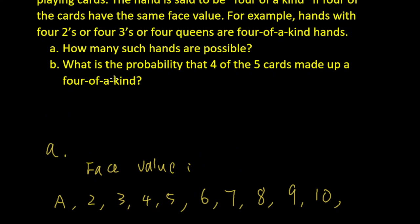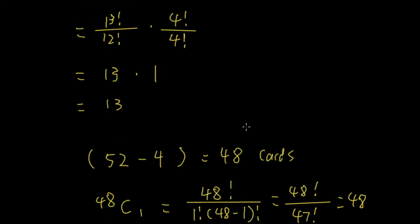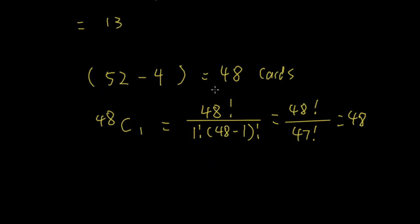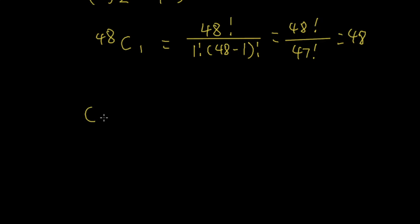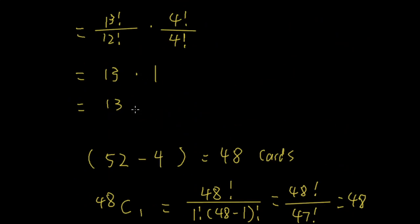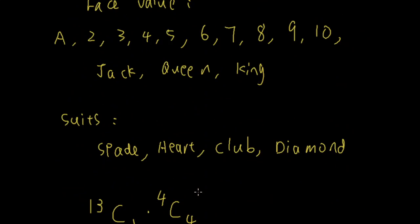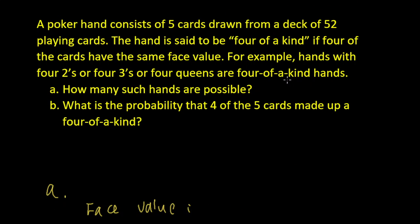To answer Part A — how many such hands are possible — we combine these results. It's 13 choose 1, times 4 choose 4, times 48 choose 1, which equals 13 times 1 times 48, giving us 624 ways. So there are 624 possible 4-of-a-kind hands plus 1 additional card.